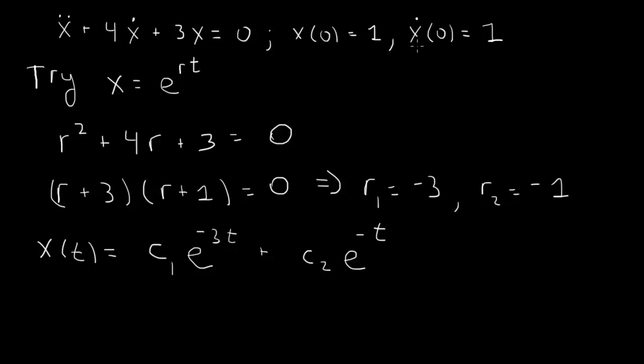We need to satisfy two initial conditions, x of 0 and x dot. To simplify matters, we can take the derivative here. This will bring down a minus 3, so minus 3 c1 e to the minus 3t. The derivative of e to the minus t brings down a minus 1, so minus c2 e to the minus t.